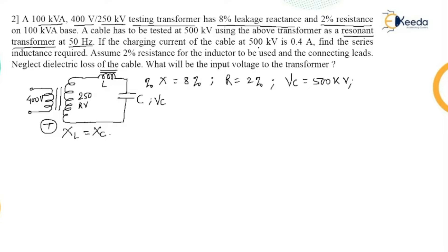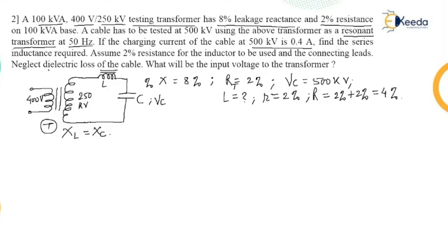The charging current of the cable at 500 kilovolt is 0.4 ampere. We need to find the series inductance required. The internal resistance of the inductor is 2%, so the total resistance becomes 2% (transformer) plus 2% (inductor) = 4%, neglecting dielectric loss of the cable.